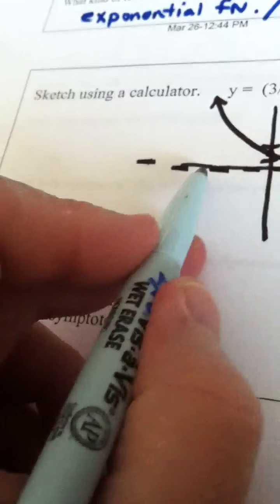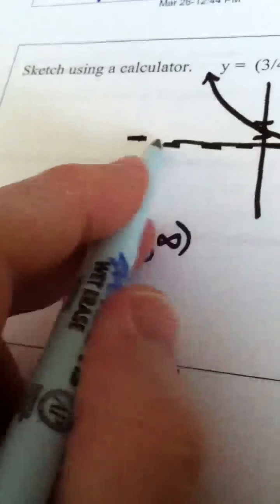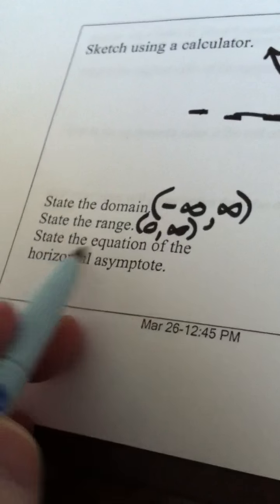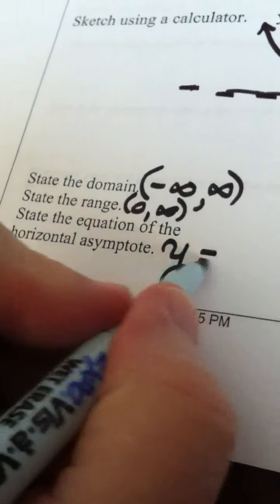it would be from 0 to infinity, not including 0, of course, because it's an asymptote occurring there. The equation of the horizontal asymptote, y equals 0.